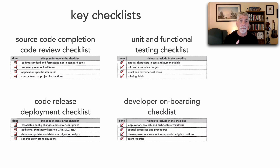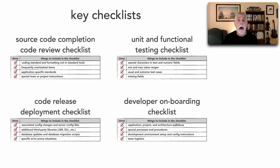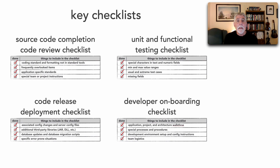The other checklist I've leveraged a lot, especially with clients that have high attrition or are building up a team, is a developer onboarding checklist. How many times have you joined a team and removed an attribute from an entity object, only to have someone come over and yell at you — 'We never remove attributes, we mark them as deprecated!' And you say, 'No one told me.' These are exactly the things to put in a developer onboarding checklist: team logistics, project walkthroughs, architecture walkthroughs, configuration and setup instructions.